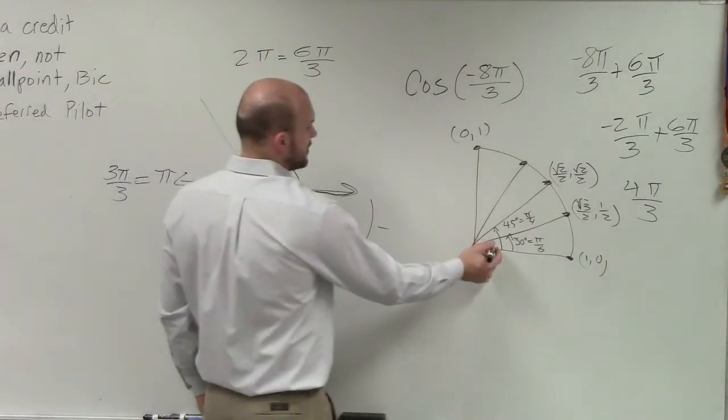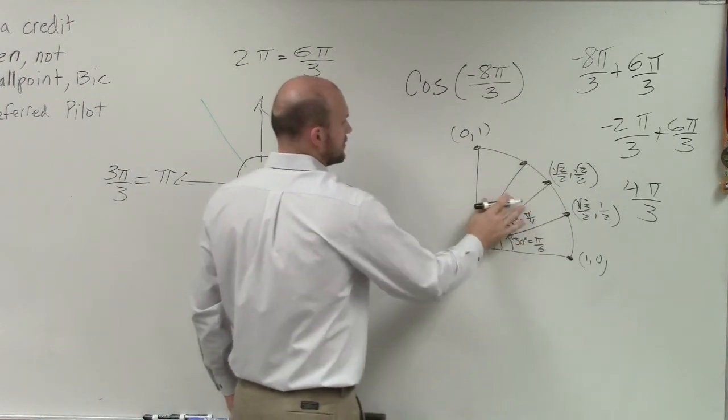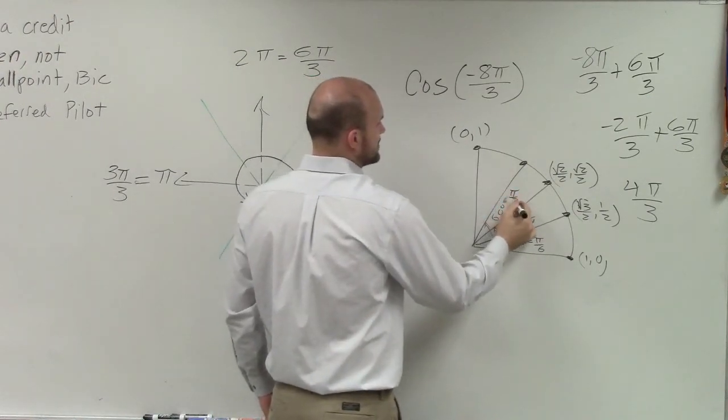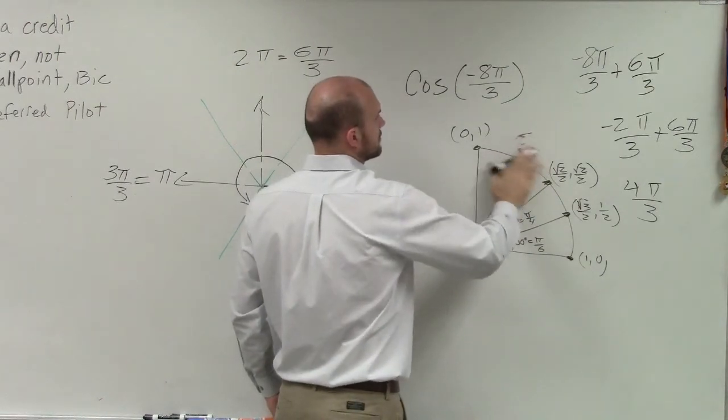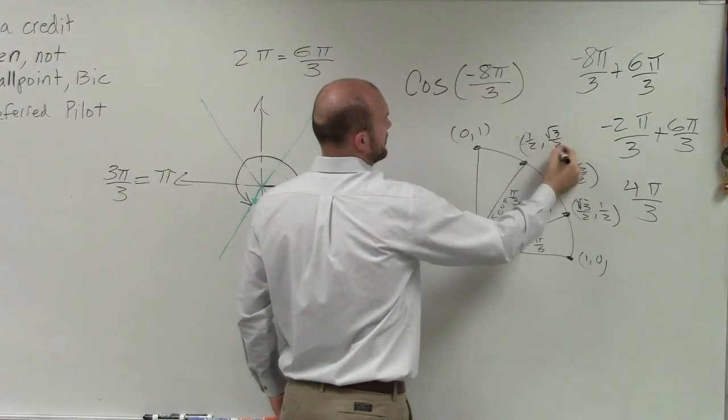And then we have our third one, which is 60 degrees, which is equal to π thirds. And that point is going to be 1 half comma square root of 3 over 2.